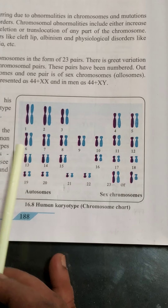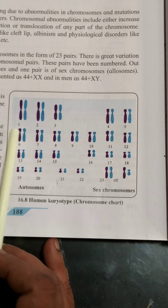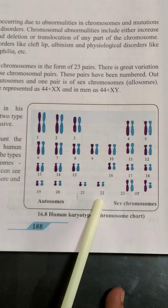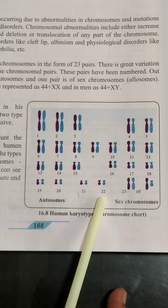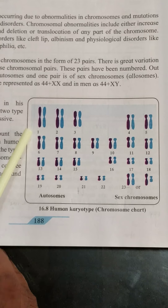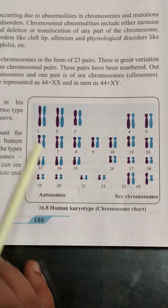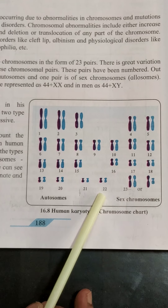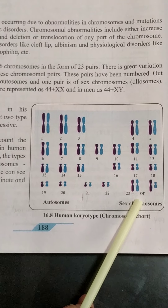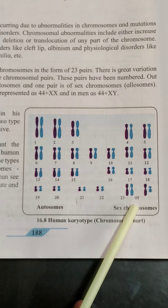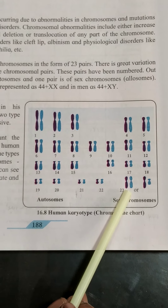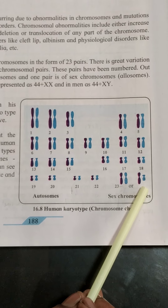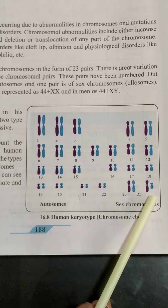So, the numbering is given from 1 to 23 according to their length. From 1 to 22, chromosomes are arranged according to length, with the first pair being the longest and the 21st pair the shortest. Pairs 1 to 22 are called autosomes, and the 23rd pair is called the sex chromosome or allosome. Females contain XX and males contain XY in their 23rd pair.